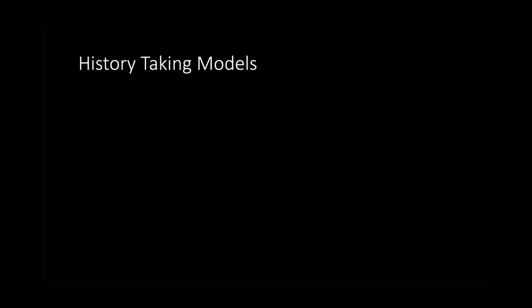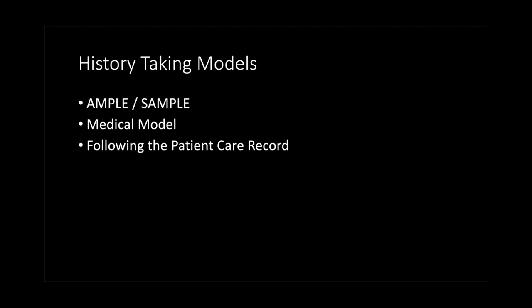There are various history-taking models around. The most commonly cited one is AMPLE or SAMPLE. There is also the medical model, which is quite popular here in the UK. You can follow the patient care record — looking at the paperwork, the laptop, the tablet — and go through what information is needed next. The problem is that if you don't have that paperwork to guide you, you are going to skip something, and just winging it and asking whatever comes to mind has the same risk. I recommend using the AMPLE or SAMPLE model because it is the easiest one to remember, though the medical model is more complex and does offer more information.